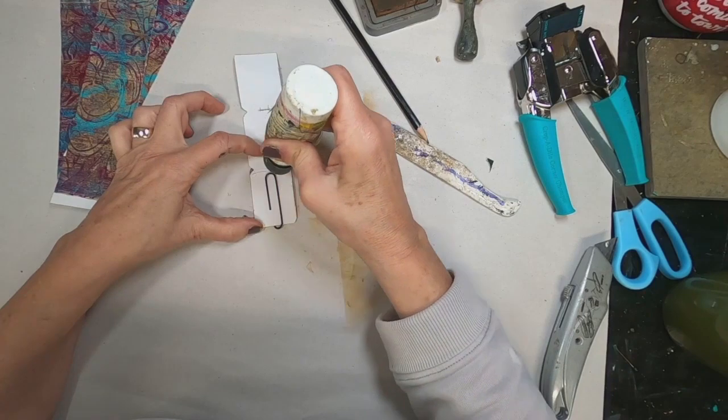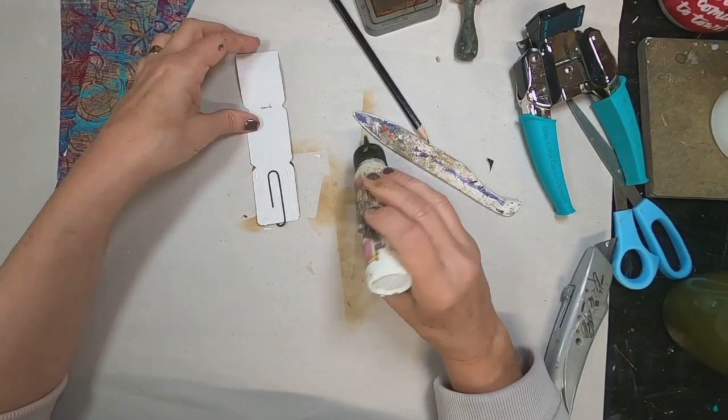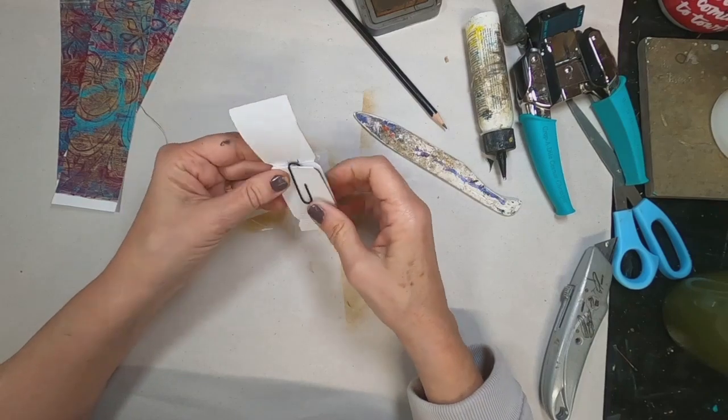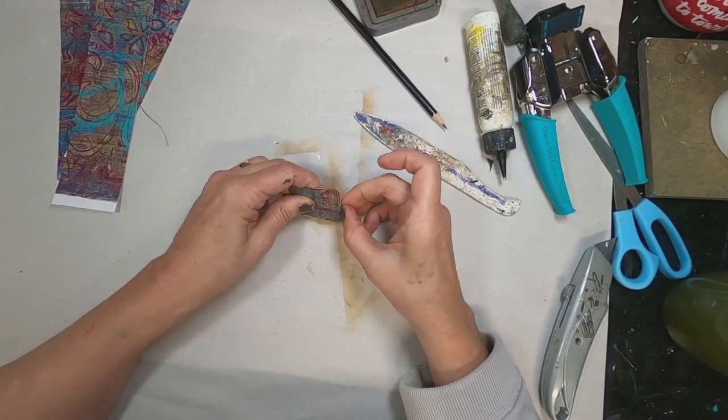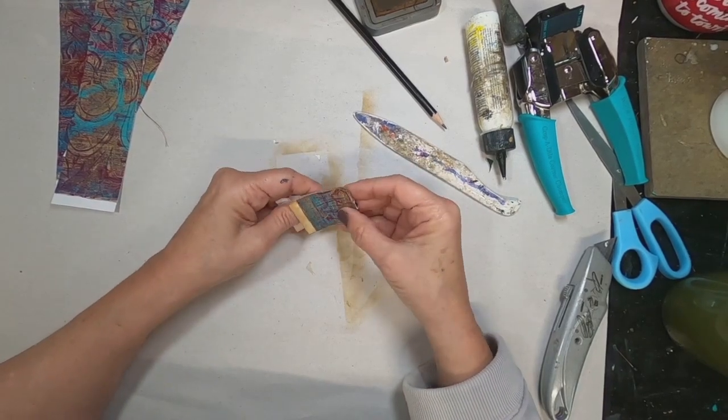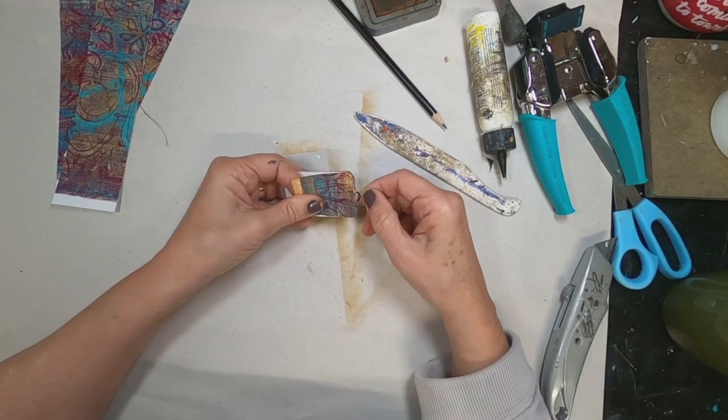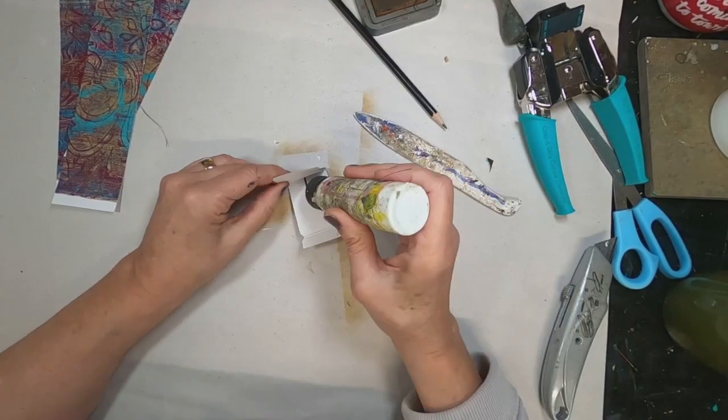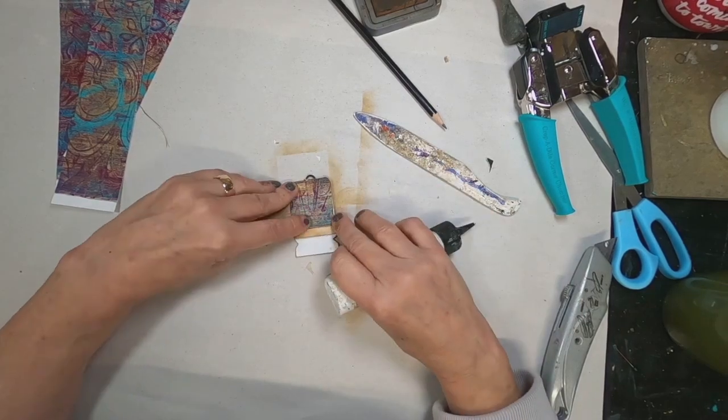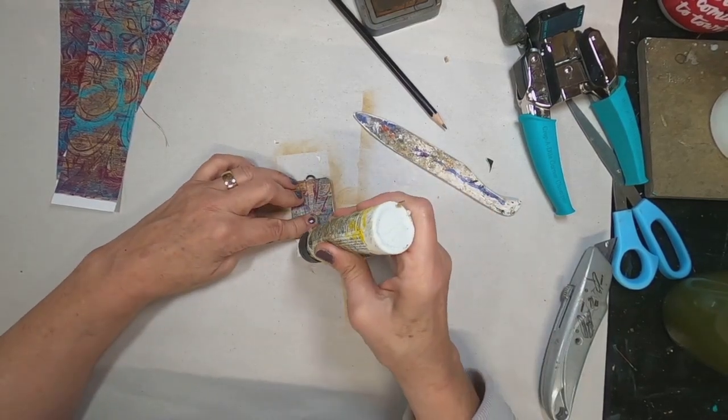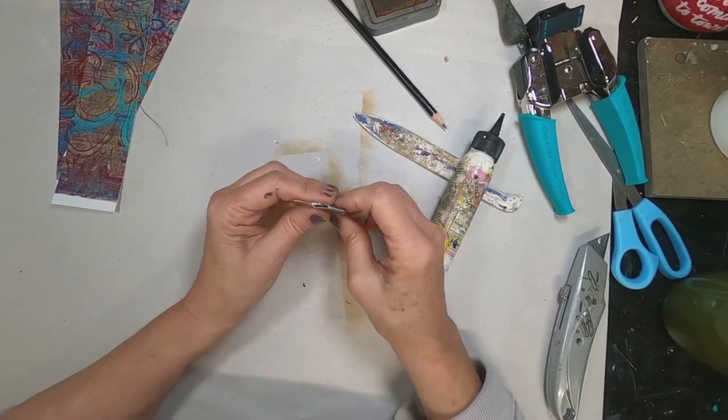Now let's just put the clip on, put some glue in place. Fold that over, pull that out. And then glue that fold over in place. And that holds that clip where you want it.